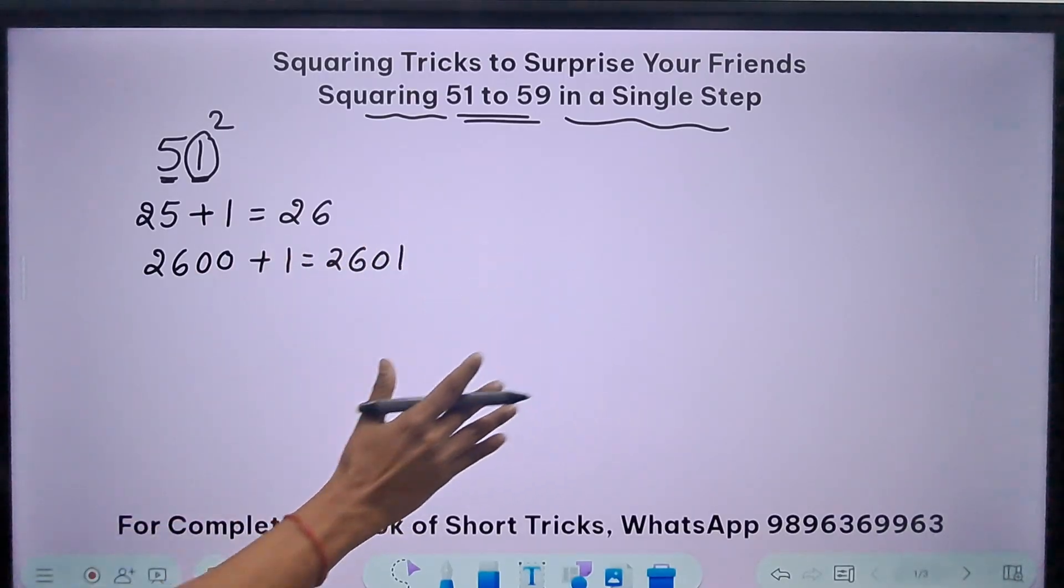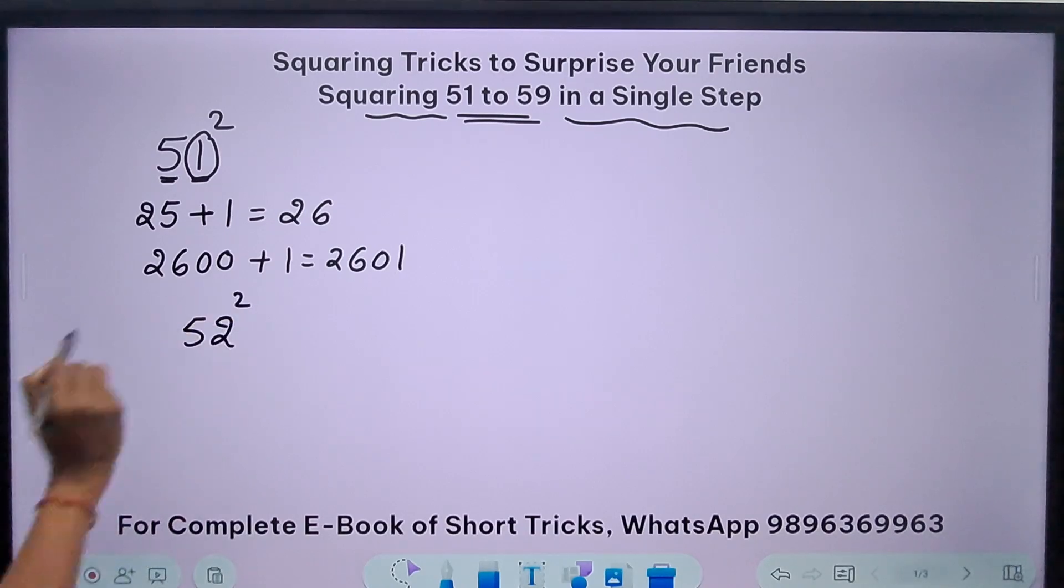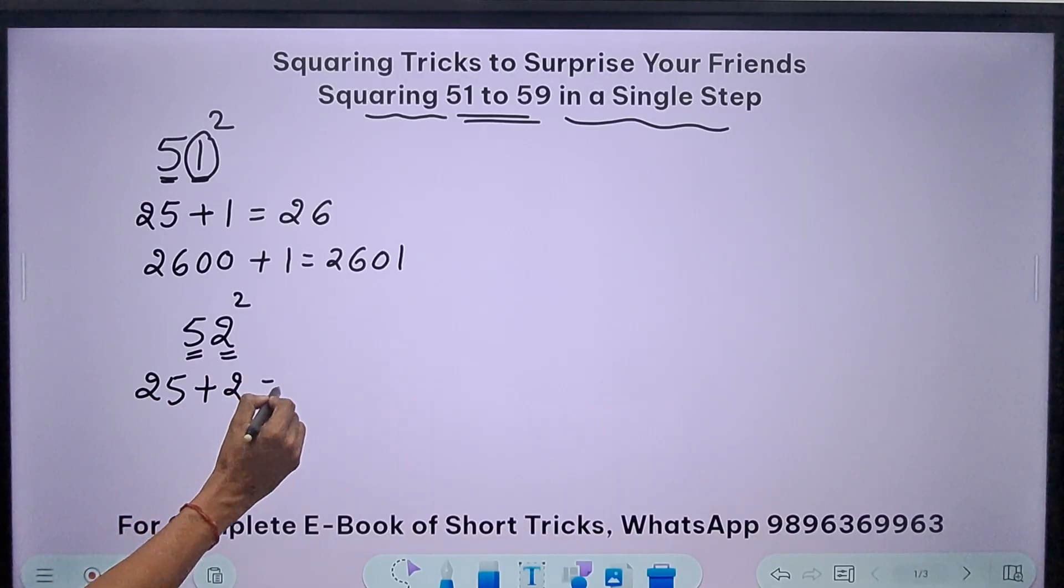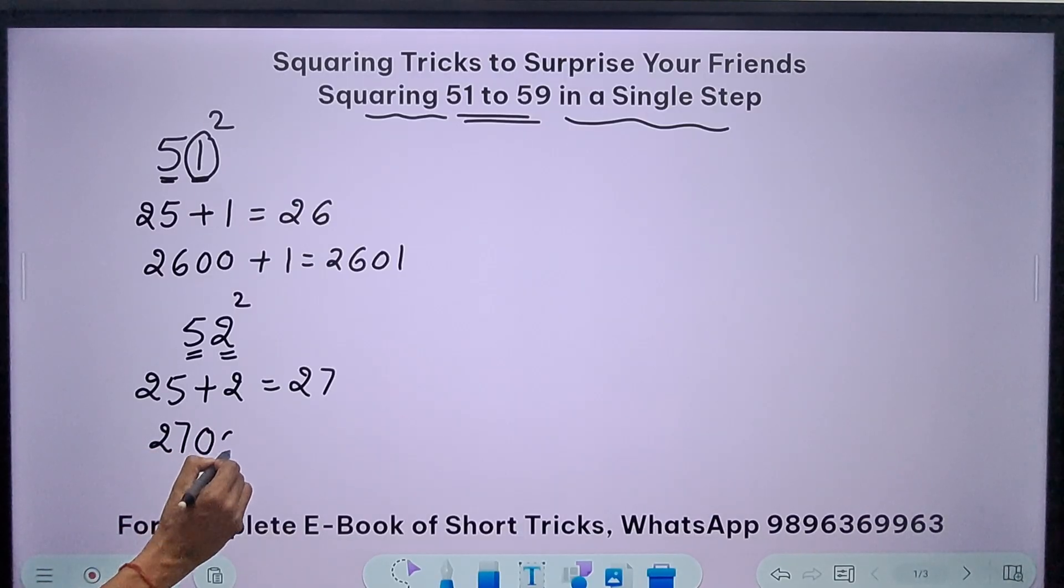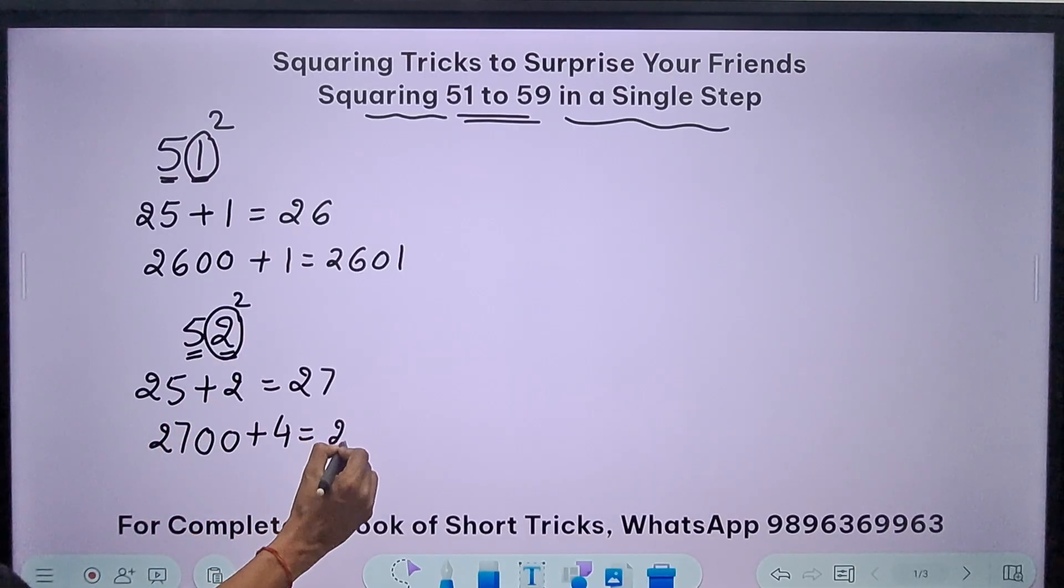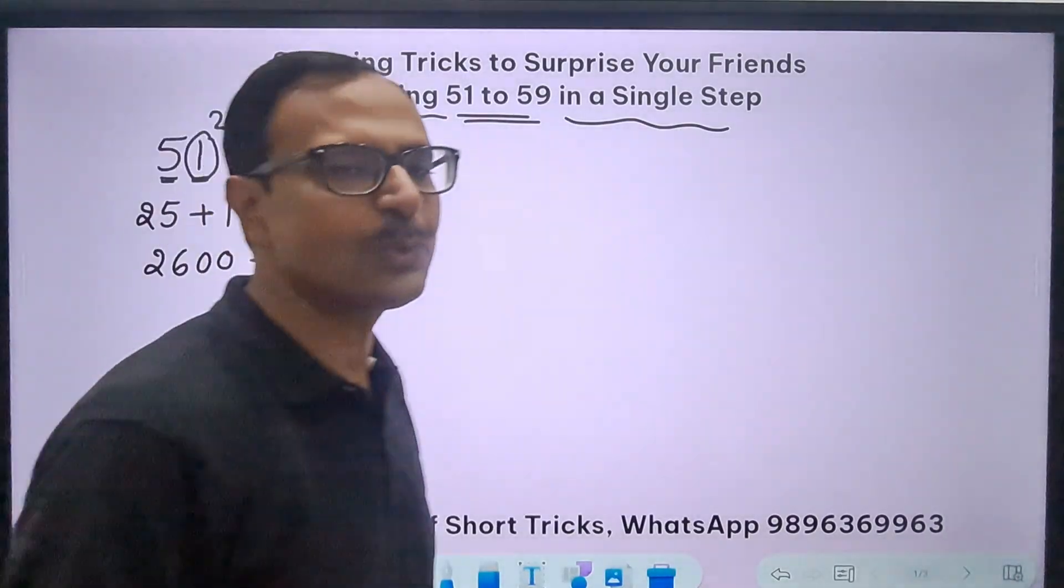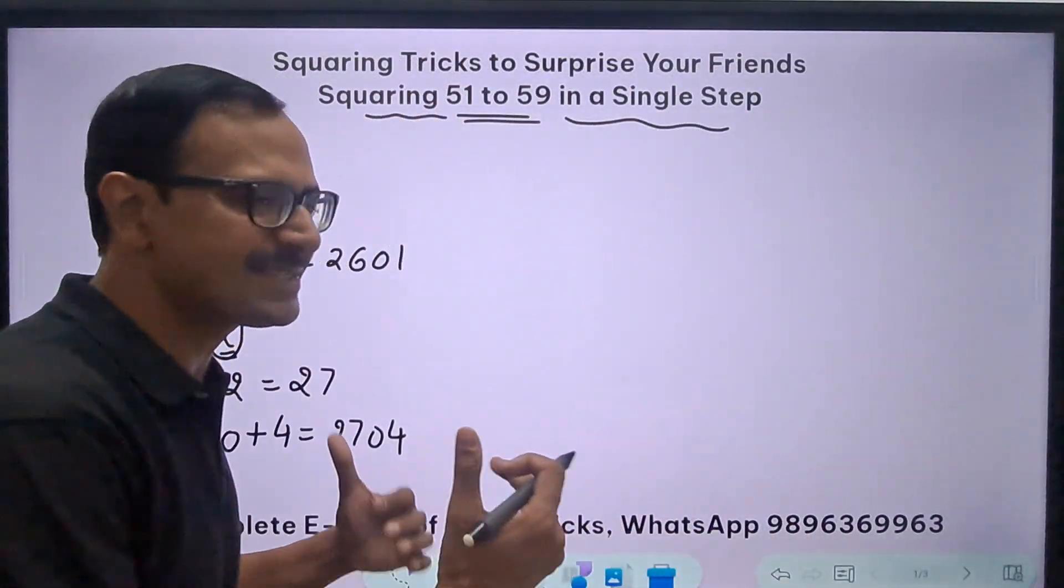So at first it will look like a little complicated, but I will solve five or six questions for you. Let's take the next number in the series: 52 square. So again, 5 square is 25, add 2 to this you get 27, and now 27 is to be multiplied by 100, so you get 2700, and add what? The square of this number 4, that is 2704 is the square of 52.